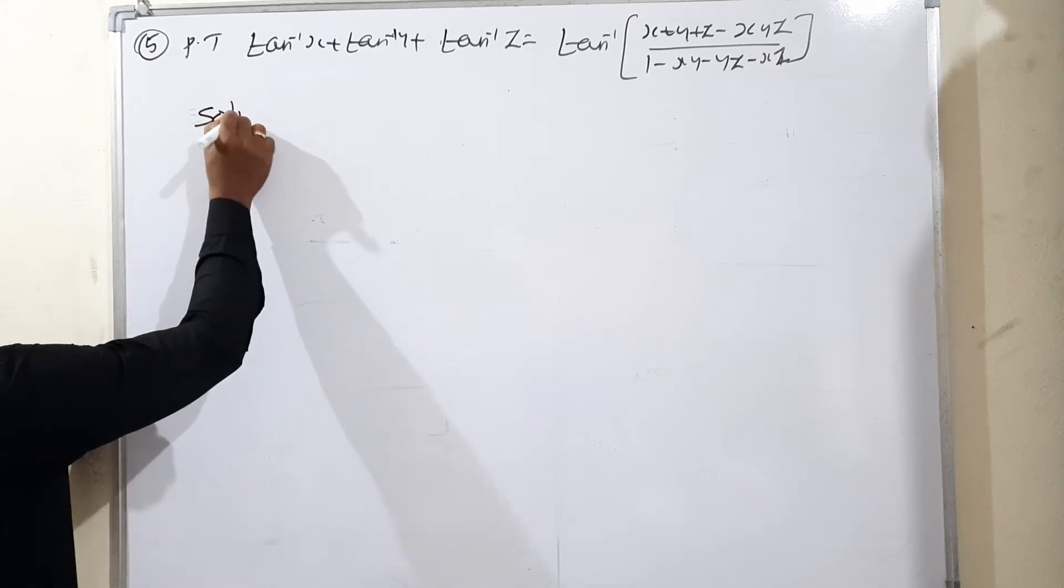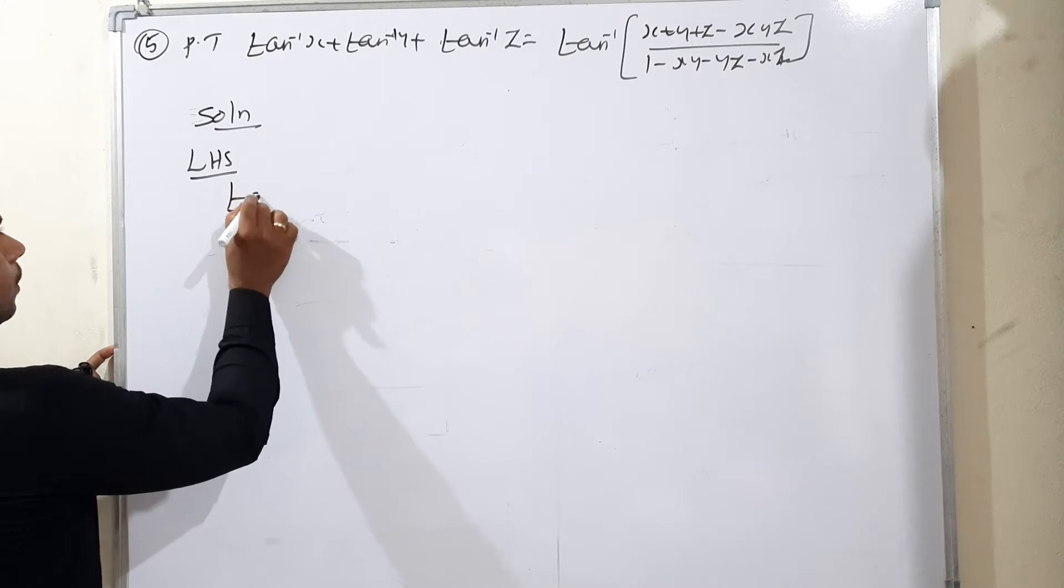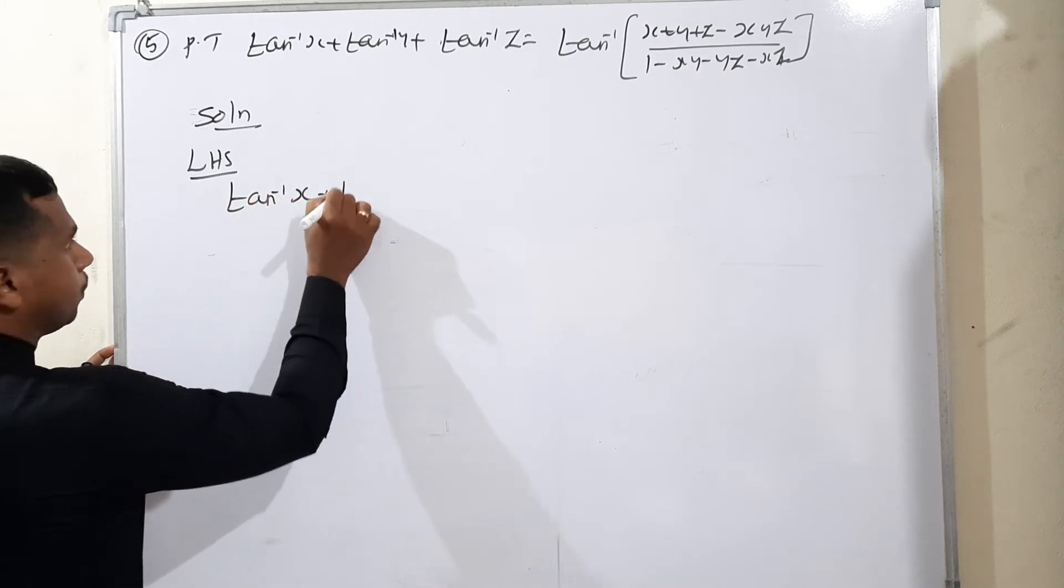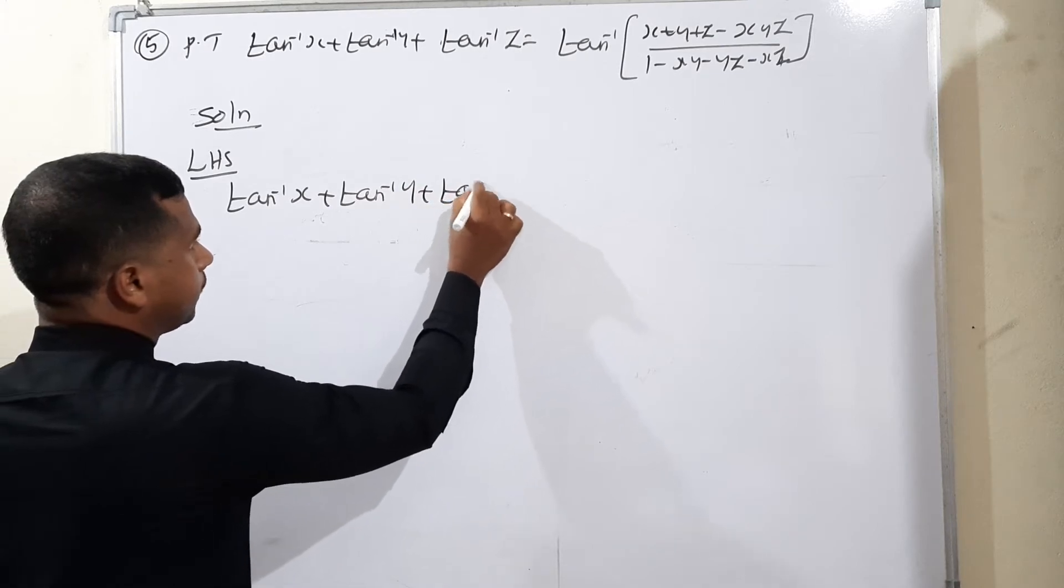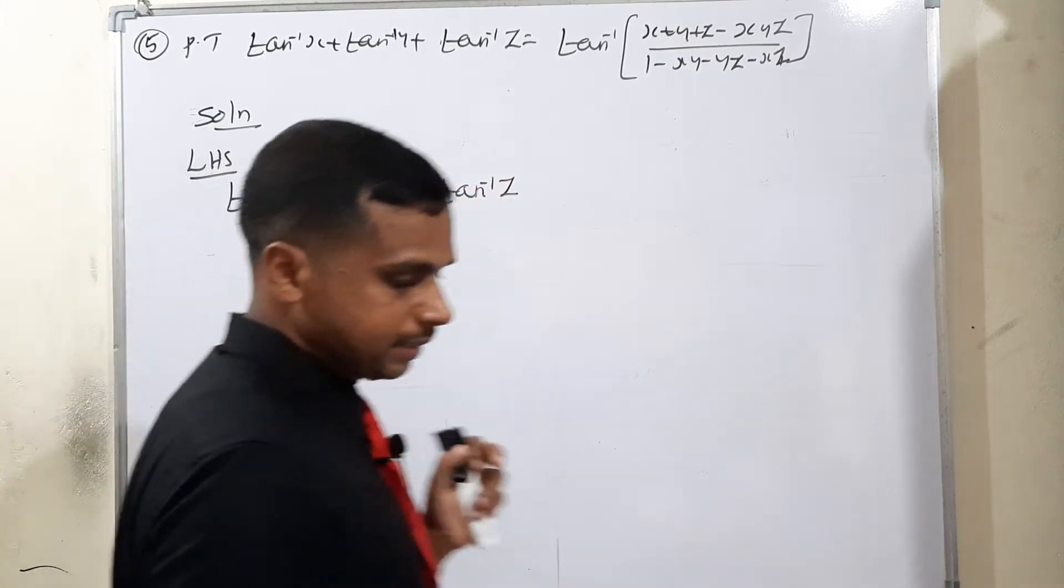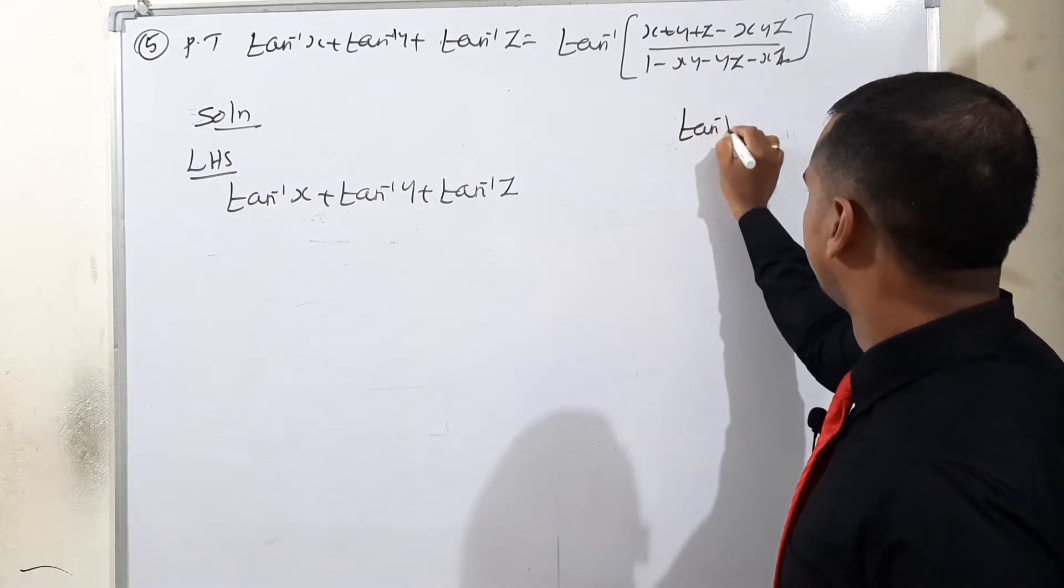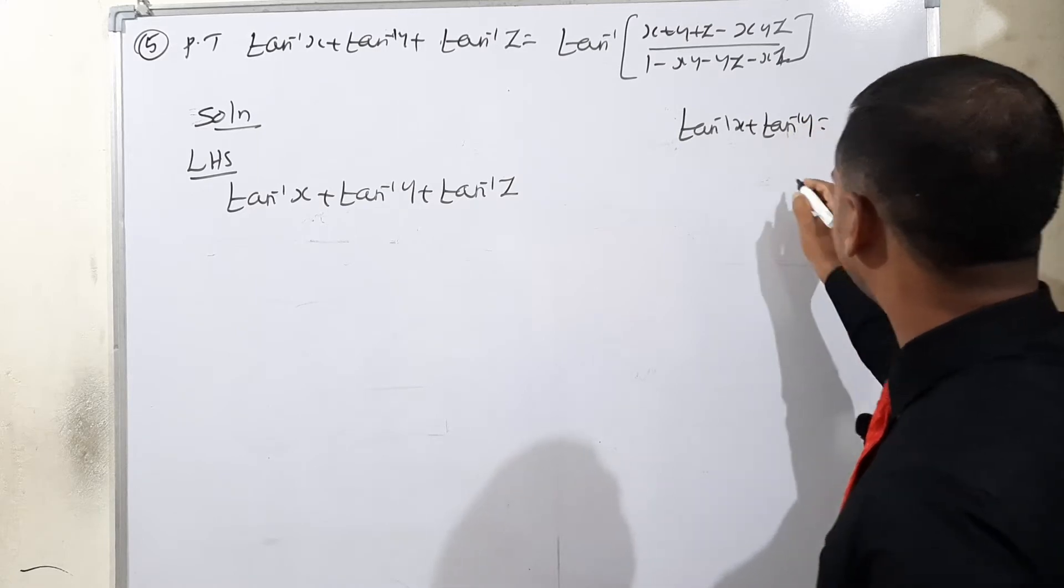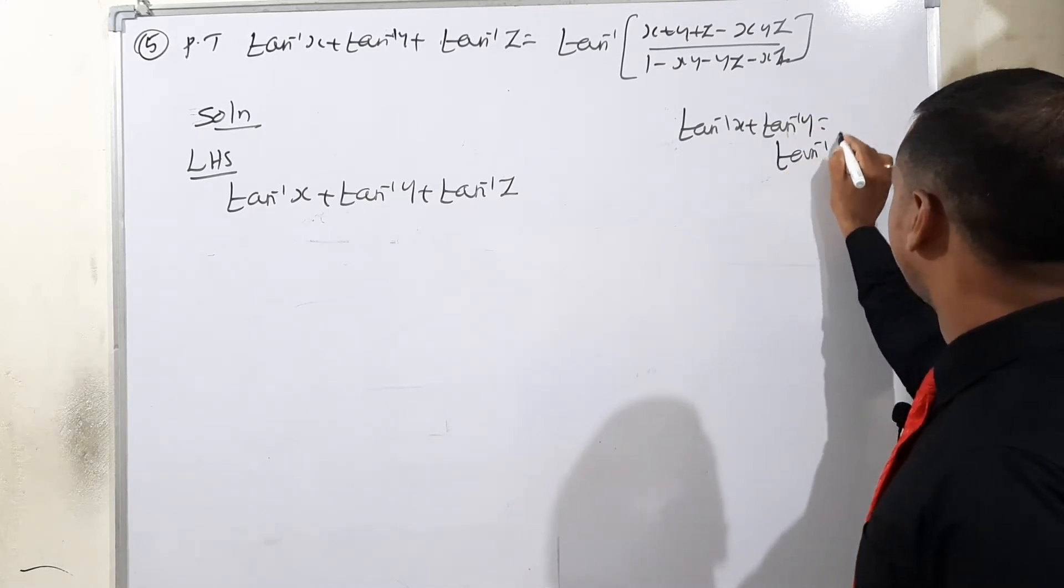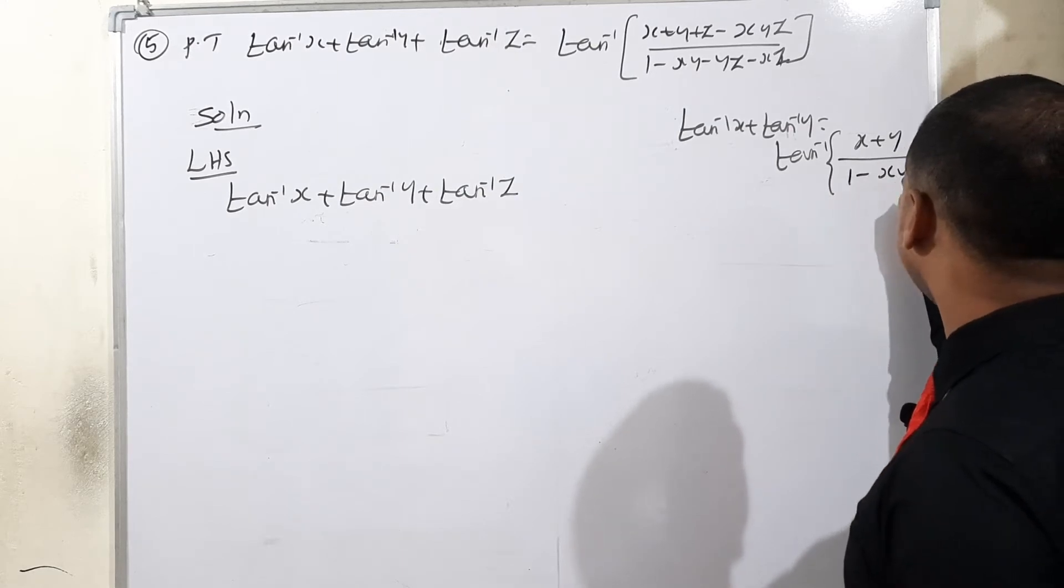Solution: I will consider first left hand side. LHS: tan inverse x plus tan inverse y plus tan inverse z. The basic formula is tan inverse x plus tan inverse y is equal to tan inverse of x plus y over 1 minus xy.